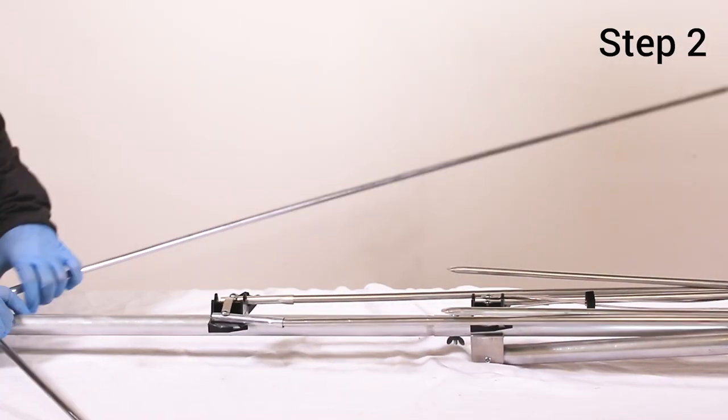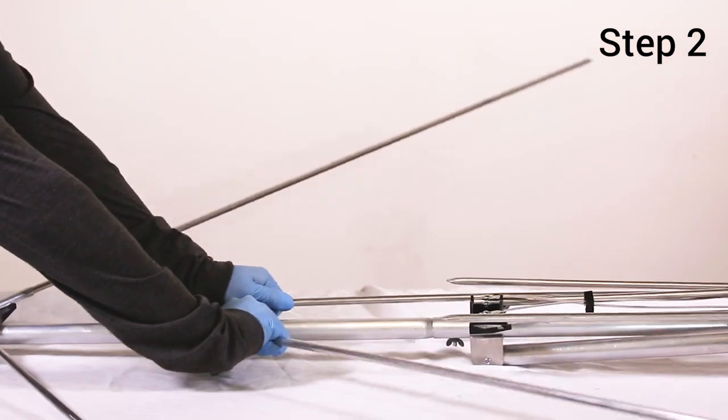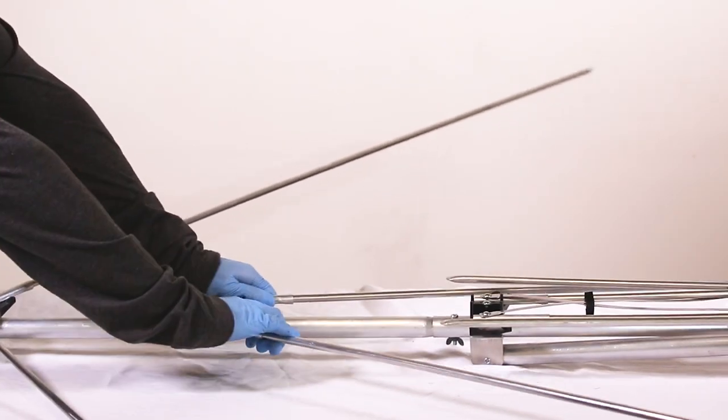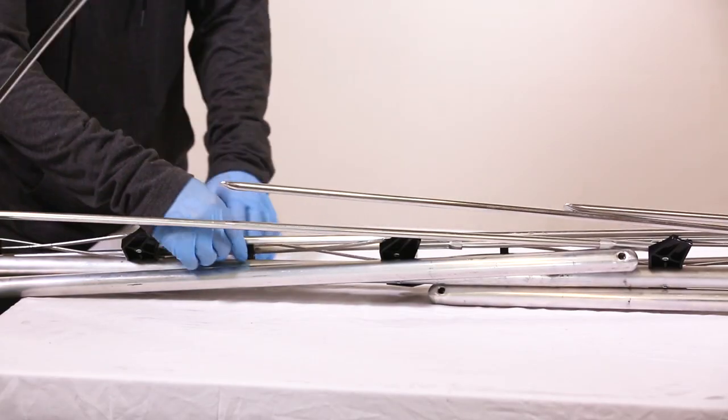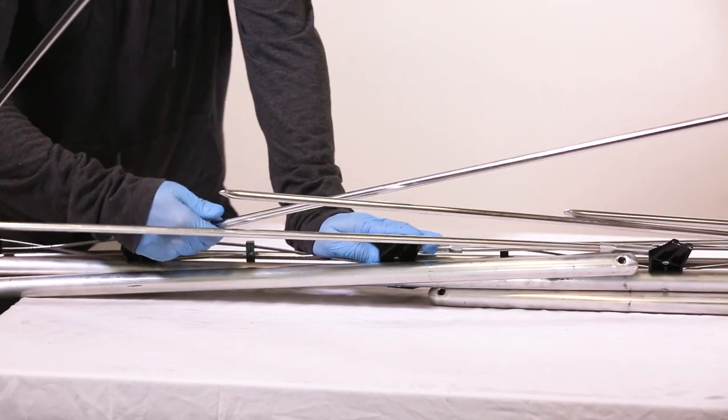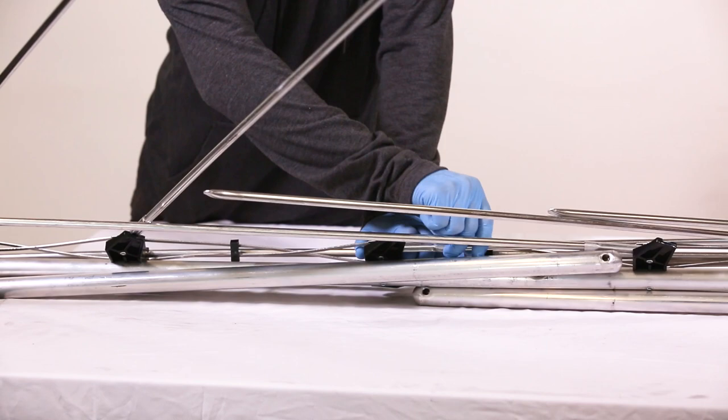Step 2: Unfold all elements on the antenna as shown. Note, the elements on this antenna are tightly riveted. To avoid bending the elements while unfolding, grip the elements near the rivets.